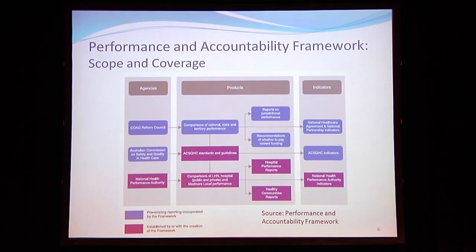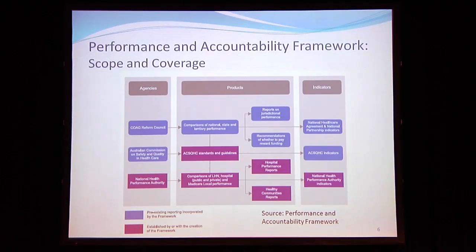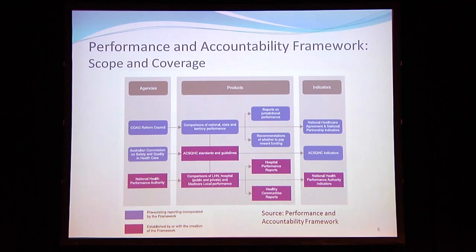We start to see interplay in the next couple of boxes, where the purple represents the performance and accountability framework, which lays the foundation for reporting from the new National Performance Authority. The next box on the left is the Australian Commission, which now operates under legislation as a statutory body since 2011, producing standards, guidelines, and suggested indicators. Some of those indicators have been adopted into the performance and accountability framework. The performance authority also has indicators above and beyond those suggested for quality and safety, including areas of equity and financial performance.